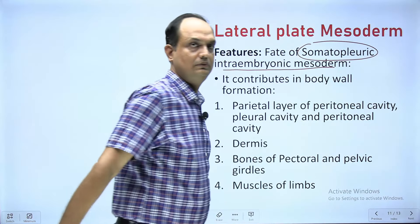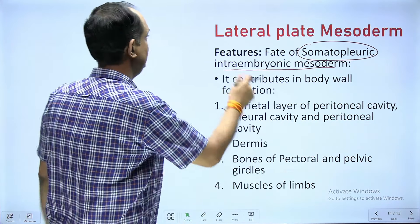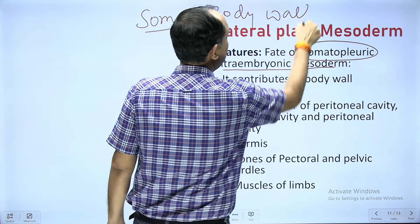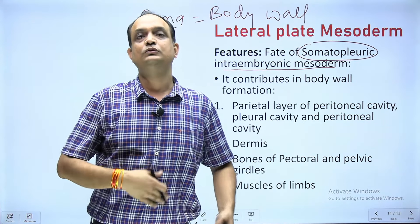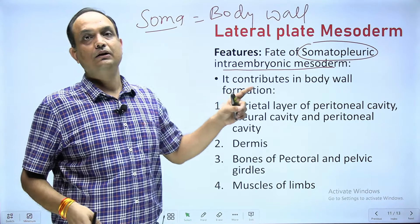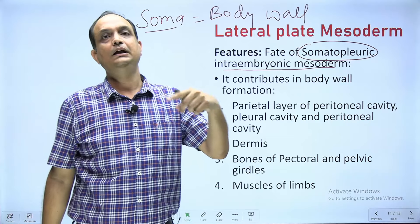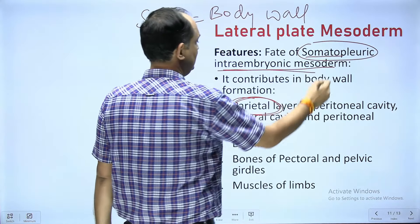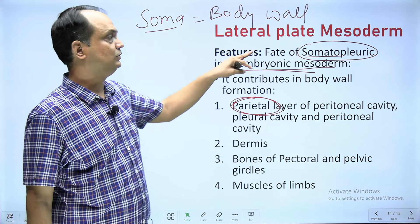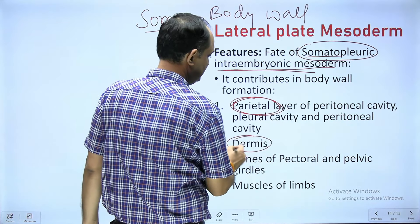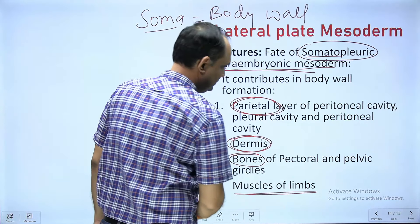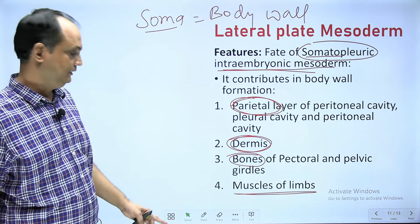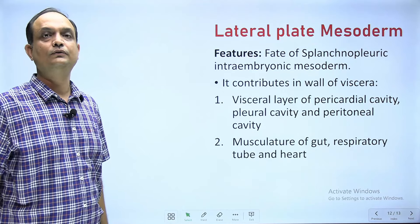Regarding the fate of somatopleuric intra embryonic mesoderm: 'soma' refers to the body wall. The parietal layer of peritoneum, parietal layer of pleura, and parietal layer of pericardium all come from the somatopleuric intra embryonic mesoderm. Additionally, it forms the dermis, bones of the body wall — specifically bones of the pectoral and pelvic regions — and muscles of the limbs.